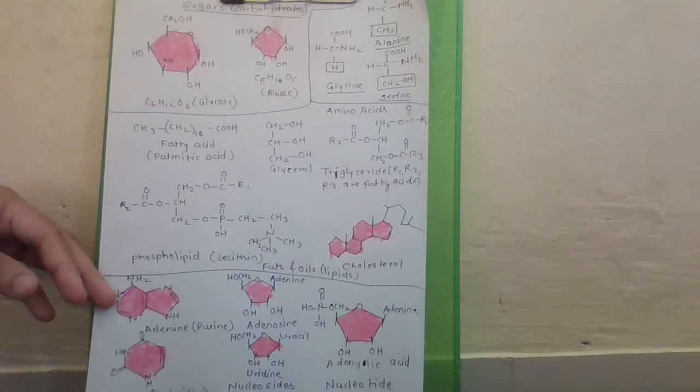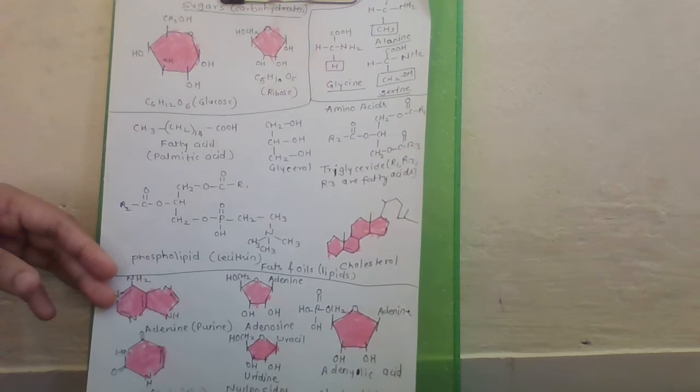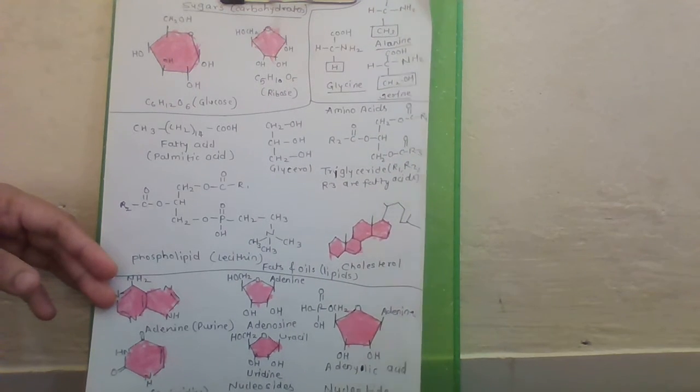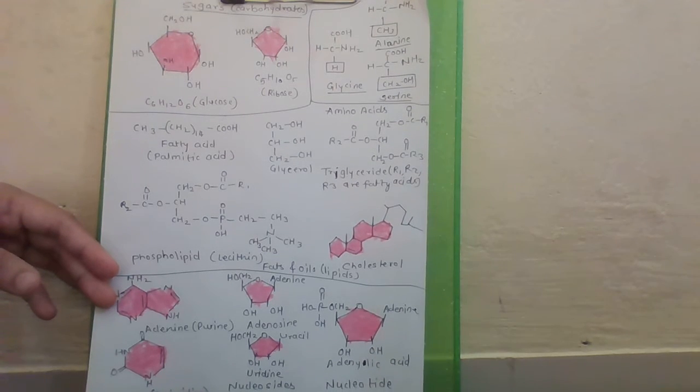Arachidonic acid has 20 carbons. Fatty acids can be saturated or unsaturated. Saturated means without double bond. And unsaturated means one or more carbon to carbon double bonds.